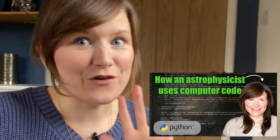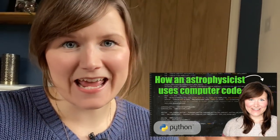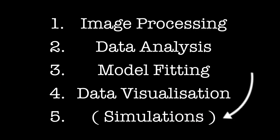In my video on how I use code as an astrophysicist, I made a list of five ways that I use code on a day-to-day basis. The fifth thing on my list was writing computer simulations of the universe, which is not something that I do — I go to telescopes and take data. But someone who is an expert on this is one of my best friends from my PhD, Dr. Ricarda Beckman, who is now a research fellow at the University of Cambridge and an expert on writing and running simulations on how black holes grow. So I rang her up to chat about how she uses code in her work, and some of that made it into my main video.